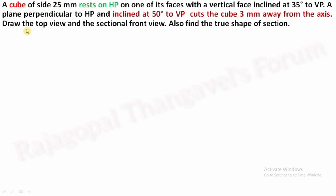Hello students, welcome back. In this video we will discuss one more section of a solid cube. If you wish to check the previous problems like squared prism, hexagonal pyramid, or cone problems, even the true shape of section as rhombus in squared prism, check the description box for a link. Now read the question: a cube of side 25 mm rests on HP and one of its faces with a vertical face inclined at 35 degrees to VP. A plane perpendicular to HP and inclined at 50 degrees to VP cuts the cube 3 mm away from the axis. Draw the top view and the sectional front view, and also find the true shape of section.